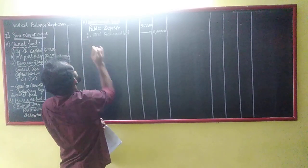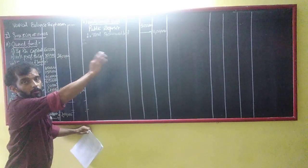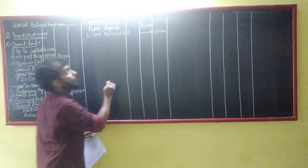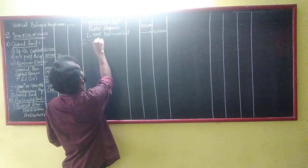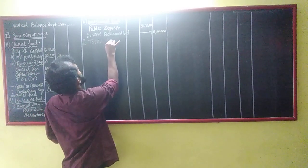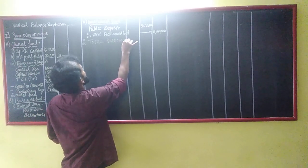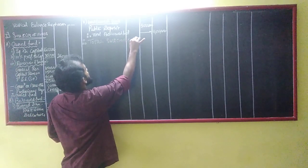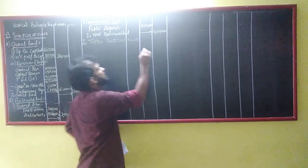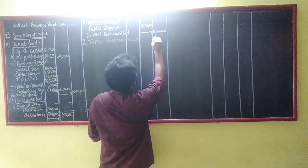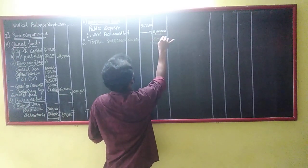Now, 30 lakhs own fund, 11 lakhs borrowed fund. So my total sources will be how much? 41 lakhs. Very good. Total sources of fund: 41 lakhs.